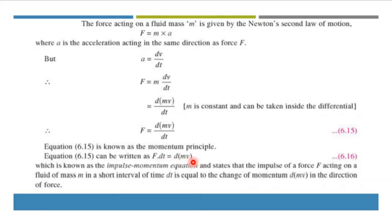This is known as the impulse momentum equation, which states that the impulse of a force F acting on a fluid of mass M in a short interval of time dt is equal to the change of momentum d(MV) in the direction of force. The product of mass into velocity is known as momentum, and d represents the differential or change. So F·dt equals change in momentum.